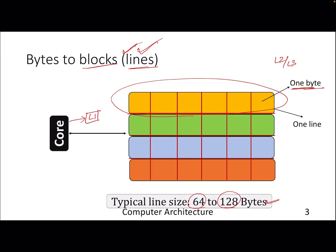The processor may demand for data of A[0] or A[1]. In that case, we need to extract the exact byte from the line and respond to the processor — not the entire line. You can think about different data types like integer, characters, floats. Your processor may demand just one byte of data, but the cache stores the entire line, so we need to extract a particular byte out of that line.